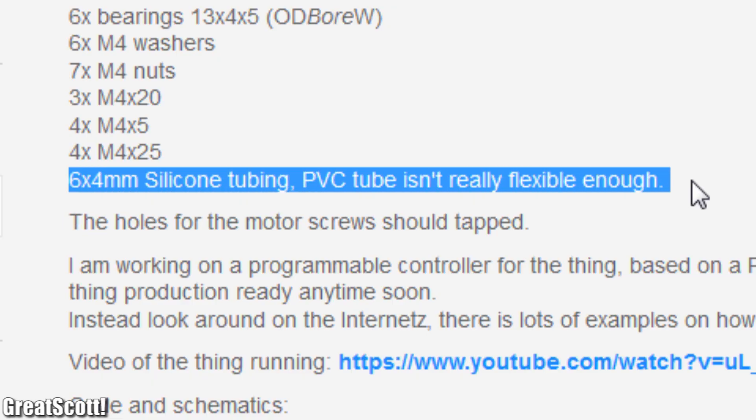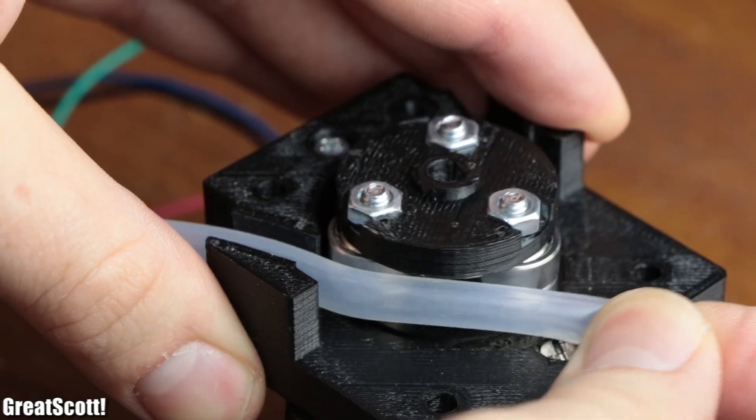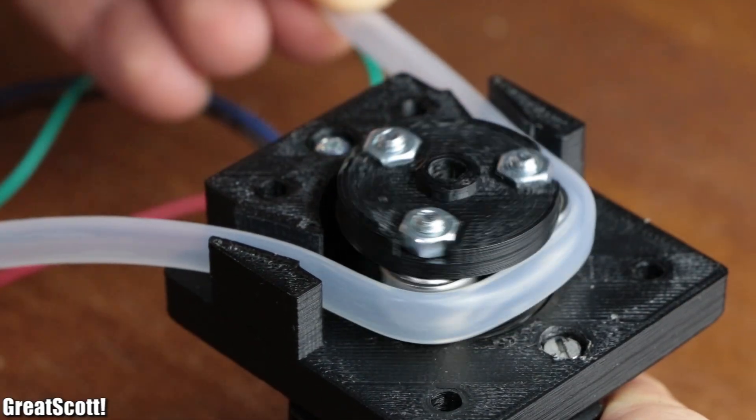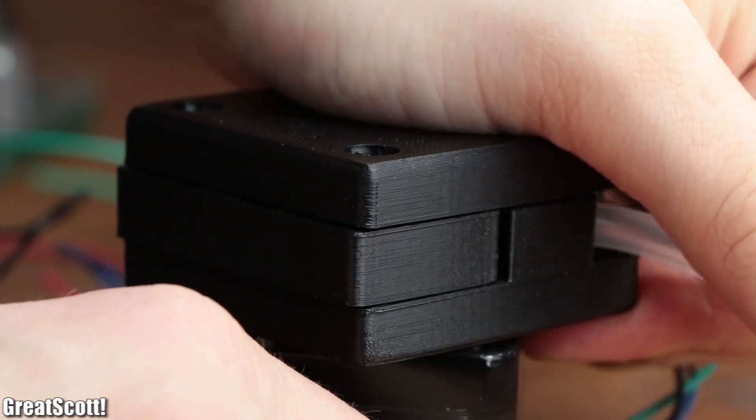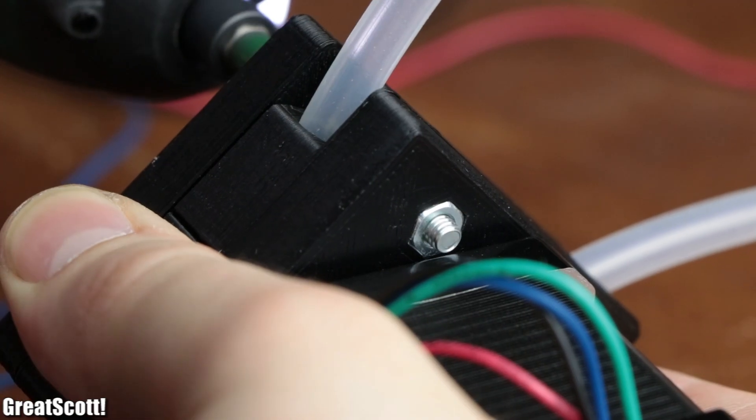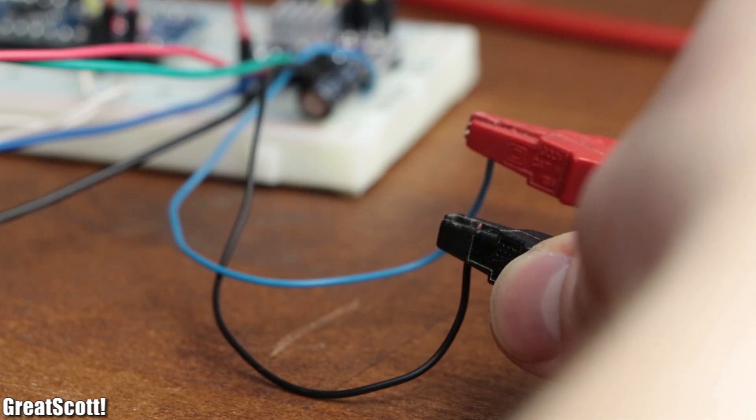At this point it was time for the silicone tube, for which Rolf recommends one with dimensions of 6 by 4 millimeters. So I went with those by placing a long piece of it inside the enclosure next to the rollers. And after adding the two missing pieces of the enclosure and closing it all up with four M4 bolts, it was finally time for a first test.